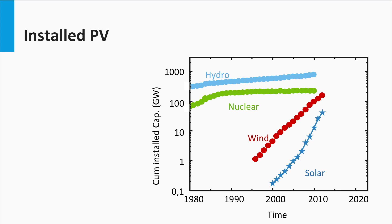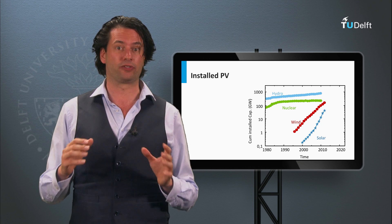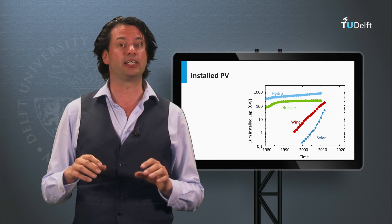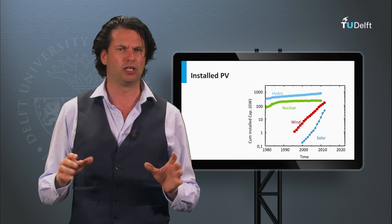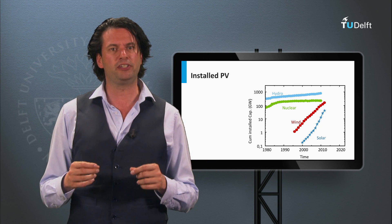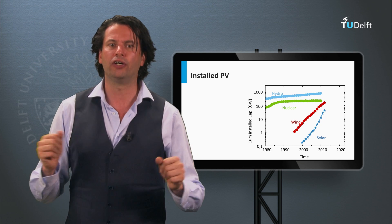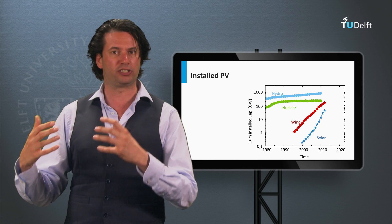The installed nuclear power is hardly growing anymore, whereas installed hydropower is still slightly growing. Wind is growing at a relative rate of 20% per year. From 2008, solar is the fastest growing energy technology with a rate far above 40%. However, it is not fair to compare installed power directly between technologies, since the capacity factor — a measure of how often a generator runs for a specific period — differs significantly.